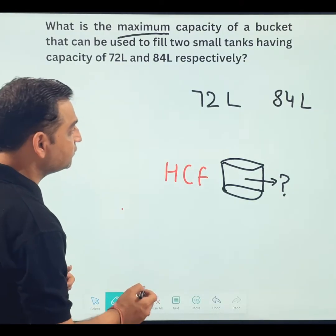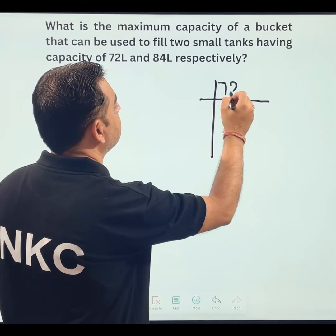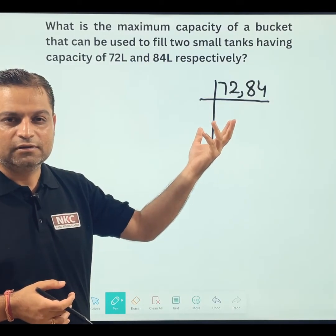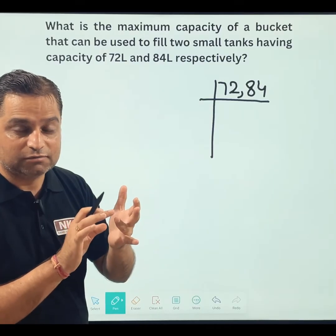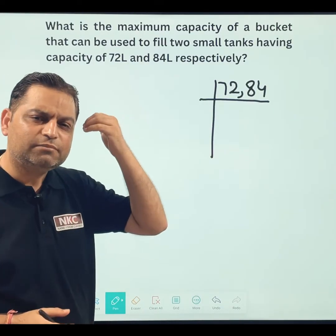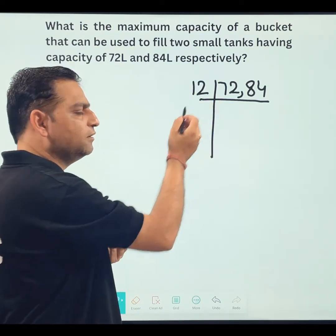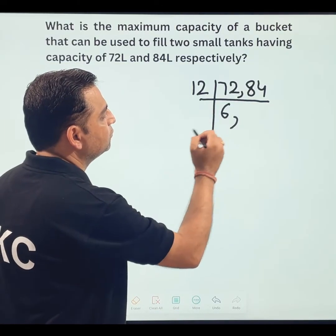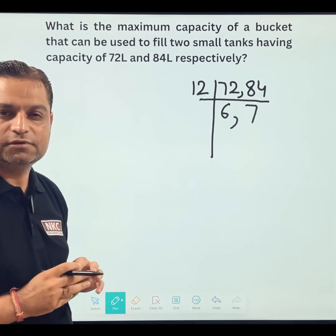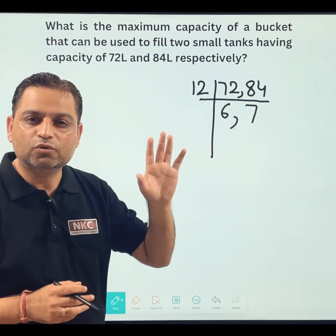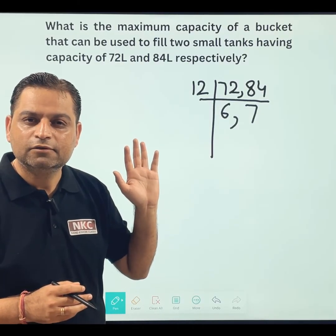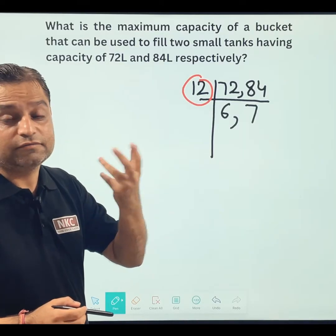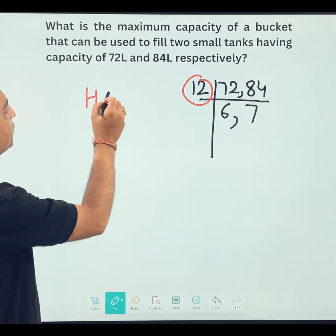So we need to find HCF of 72 and 84. I am doing the division method, which is very easy. You just need to find a number by which both are divisible. They are divisible by 2, by 4, and they may be divisible by 6. But if you know the table of 12 — we usually say we should learn tables till 20 — everybody knows 12 times 6 is 72 and 12 times 7 is 84. Now, 6 and 7 are not divisible by any common number, so no need to continue further. This particular 12 is the HCF.